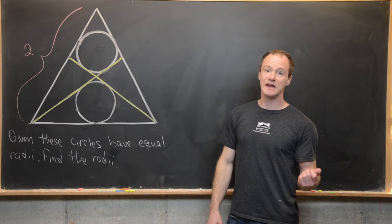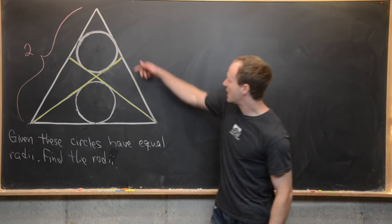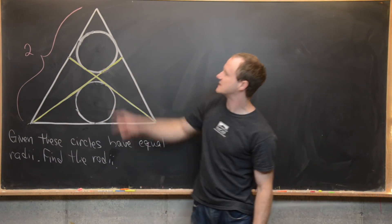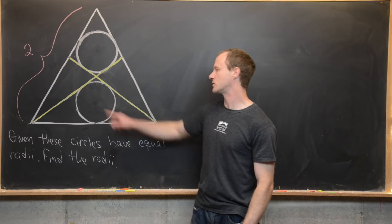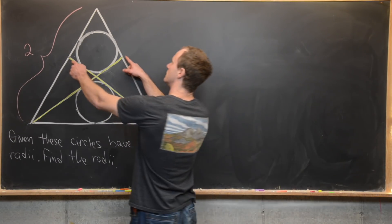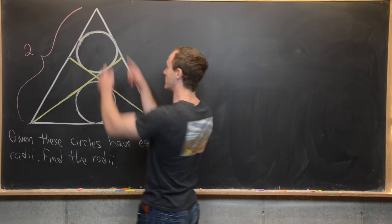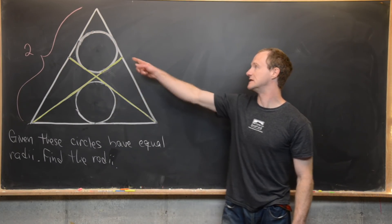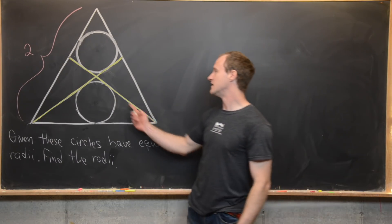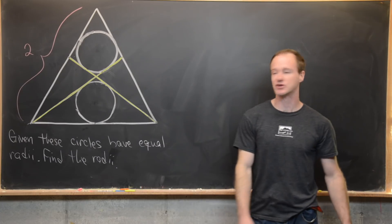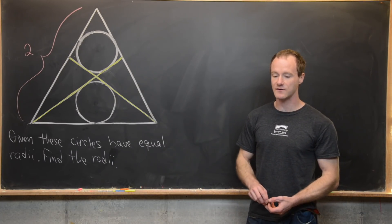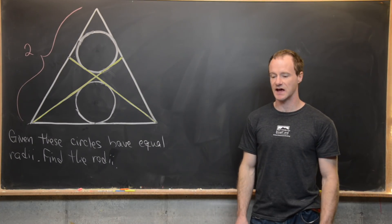Notice you don't get equal radii all of the time. If we were to move these two points down, you would increase the radius of the top circle and decrease the radius of the bottom circle. Furthermore, if you were to move these two points up, you would increase the radius of the bottom circle and decrease the radius of the top circle. So these lines are in special positions, and our goal is to find the radius of these circles given this setup.